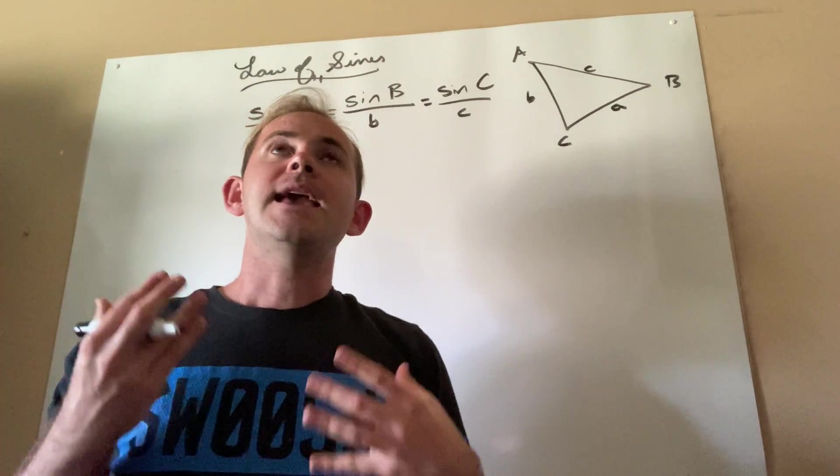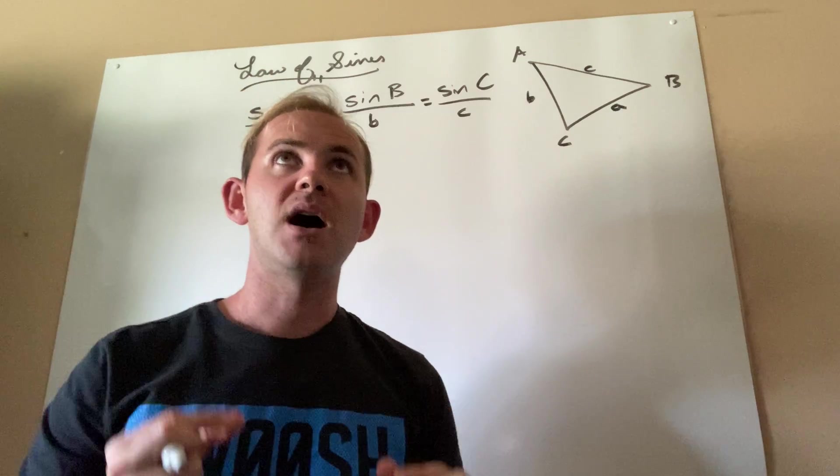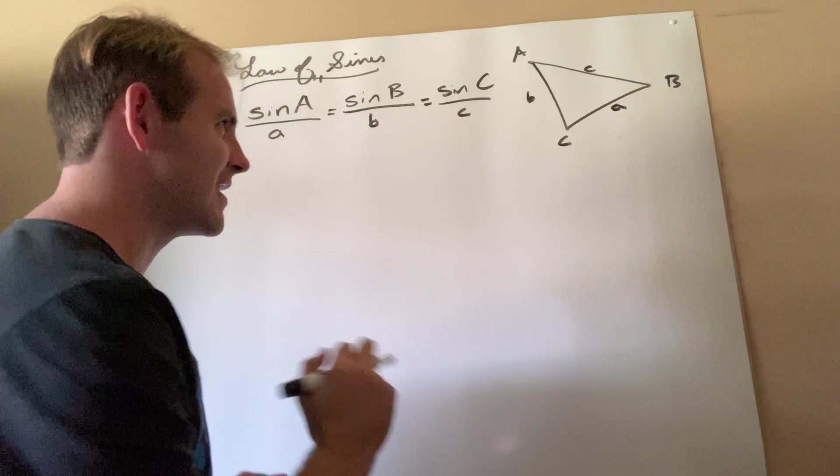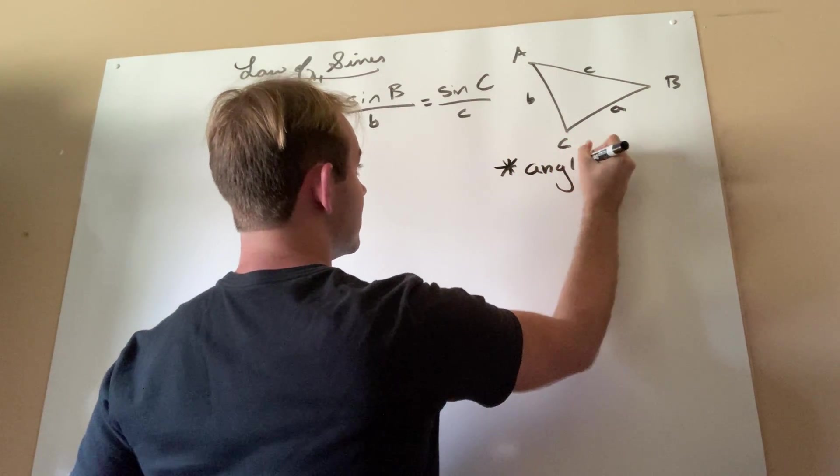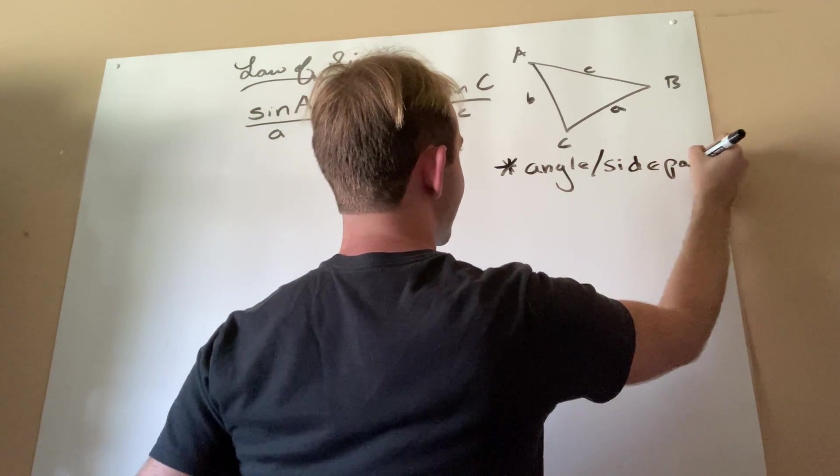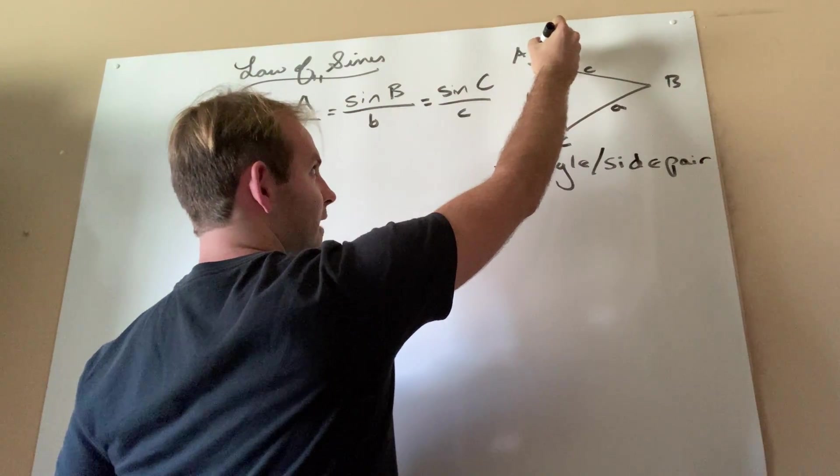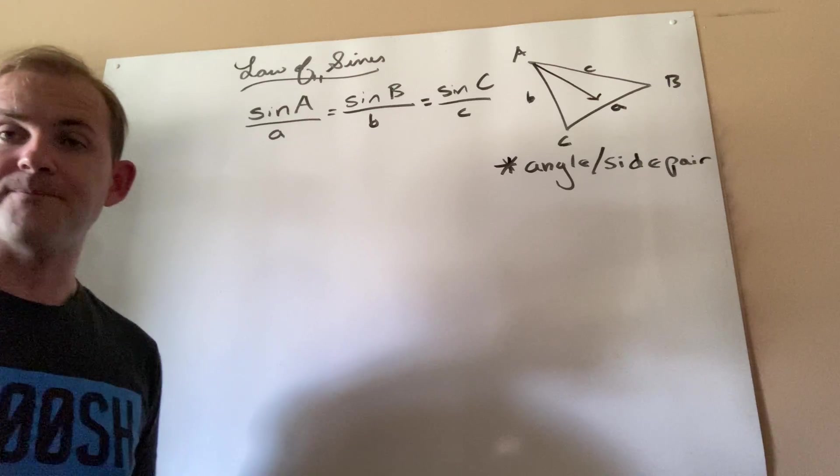Now, in order to use the law of sines, there's one thing we must have. And this is very important. I'm actually going to write it down here. What we must have is what I call an angle side pair. What exactly does that mean? Well, if I have angle a, I would also want to have the side that's across from it.